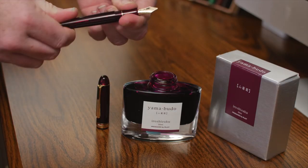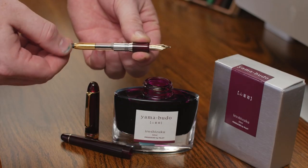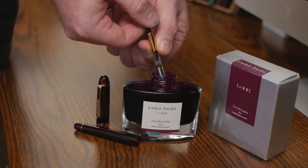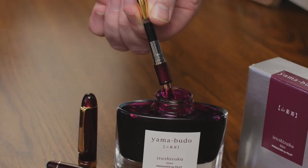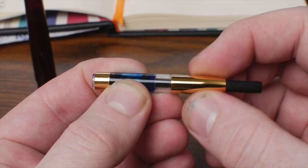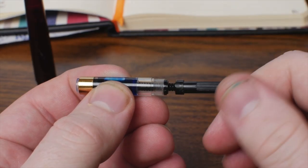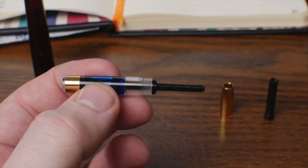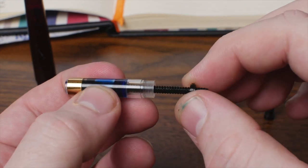The 3776 line utilizes Platinum's proprietary cartridge converter design, and thankfully this pen does ship with a converter. This is my only other point of contention. I'm not a fan of proprietary CC designs, but I'd hardly consider it a deal-breaker. The converter seems very well made and can be easily disassembled for cleaning or lubrication.